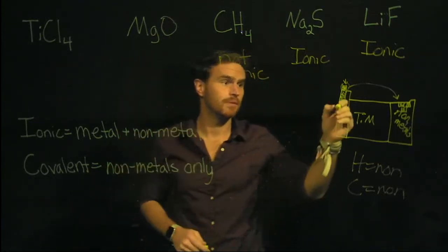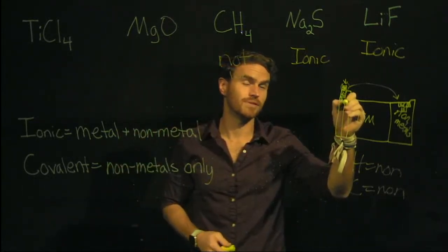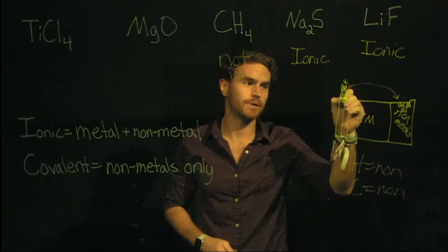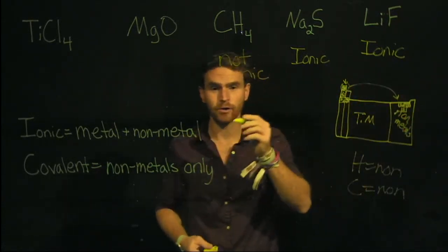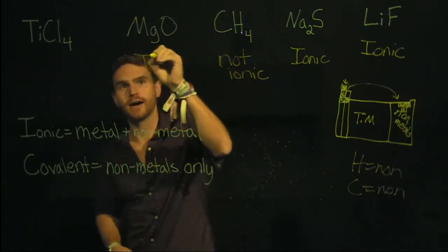Now, magnesium is right around here. I believe it's the 12th atom on the periodic table. Oxygen is over here, so you have a metal and a non-metal. Therefore, it's ionic.